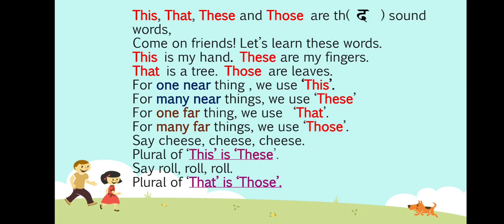As this poem is self-explanatory, this concept is explained in the lines of the poem itself. The words 'this' and 'that' are used in singular form — meaning for one thing. And the words 'these' and 'those' are used in plural form. The plural of 'this' is 'these' and the plural of 'that' is 'those'.